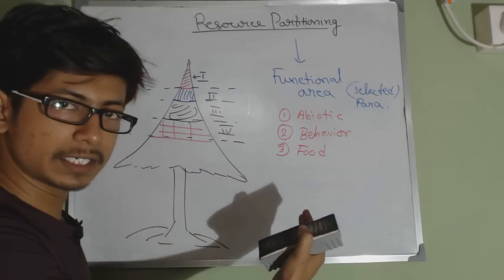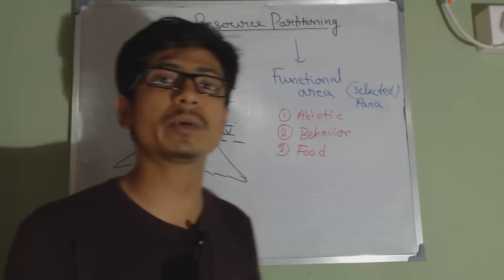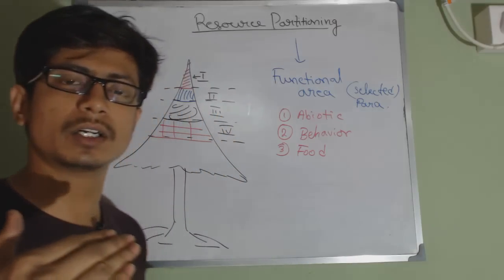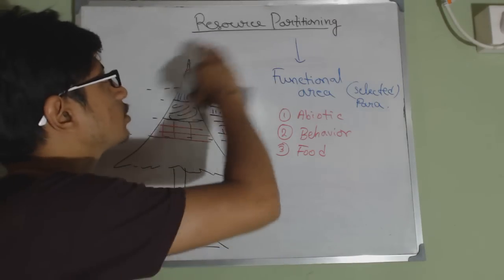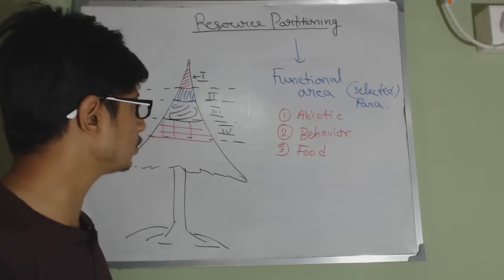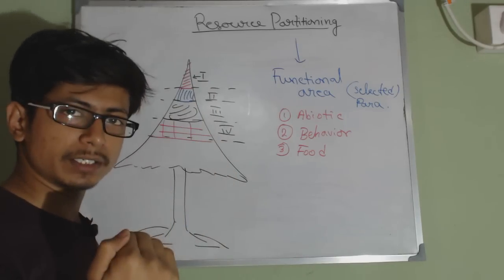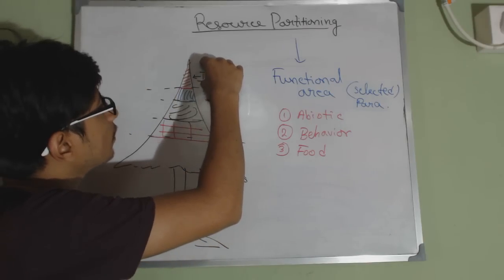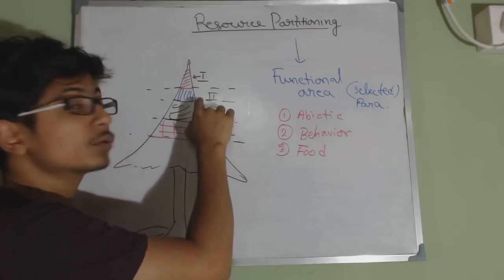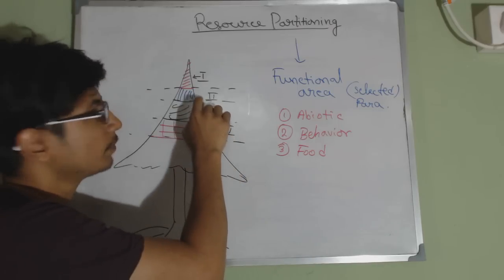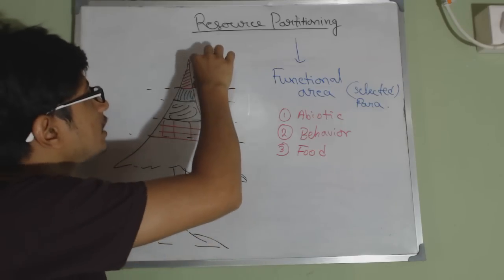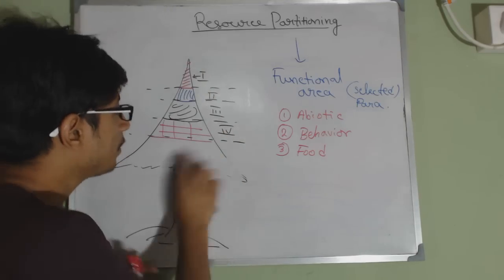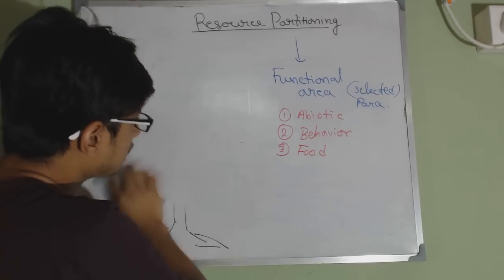The second option is to stay together by compromising some habitat or some part of the niche. To do that there are several options — resource partitioning was one option, where species partition and share their resources. The species living at the top of the tree will not come down to use the resource of the other species; they stay on their own partitioned space. But now we are going to see character displacement, which is another important concept.